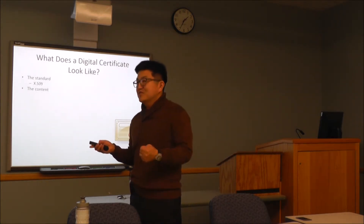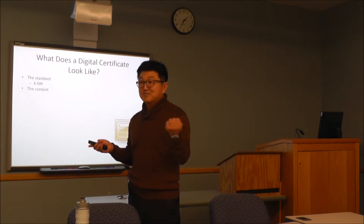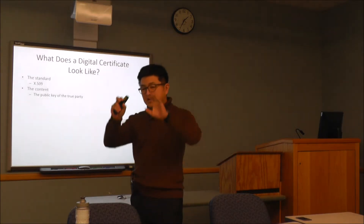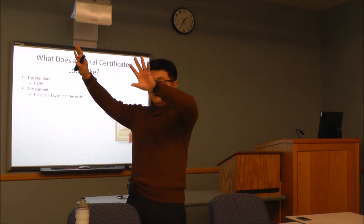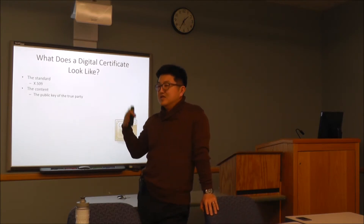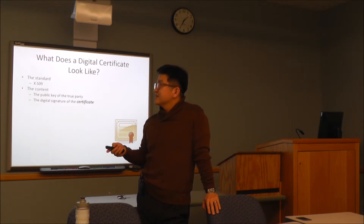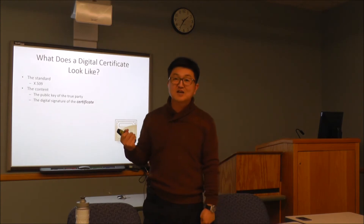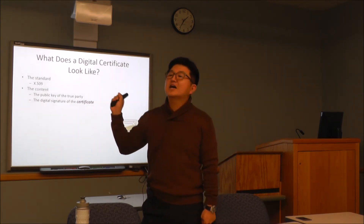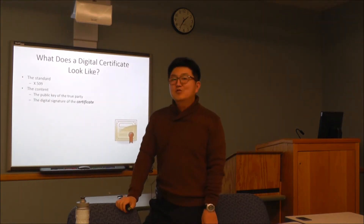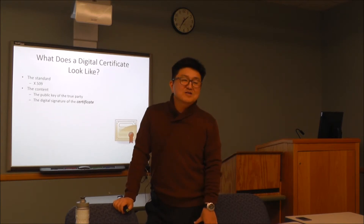So what does it contain? The most important piece is the public key — the public key of the true party. That certificate will say this public key belongs to this organization. But in order to really prove the relationship you need some additional pieces of information, like the digital signature of the certificate, because what if somebody intercepted the certificate itself and made some changes? So somebody actually has to sign the certificate.